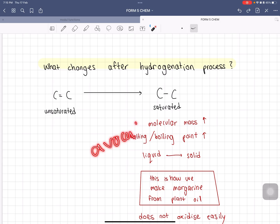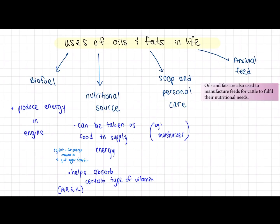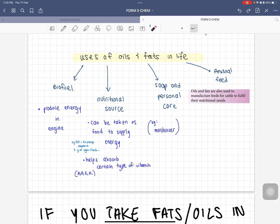Some of the uses of oils and fats in our life: first, biofuel which reduces energy in engines. Nutritional source which can be taken as food to supply energy and it also helps to absorb certain types of vitamins like vitamin A, D, E, and K which are fat soluble. Next is soap and personal care, for example in your moisturizer like your skin care or even your lotion for your body care.